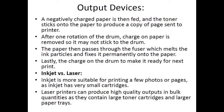A negatively charged paper is then fed in and the toner sticks onto the paper to produce a copy of the page sent to the printer. After one rotation of the drum, the charge on the paper is removed so it does not stick to the drum. The paper is then passed through a fuser — basically a heater — which melts the ink particles and sticks them onto the paper permanently. Lastly, the charge on the drum is erased to make it ready for the next print.